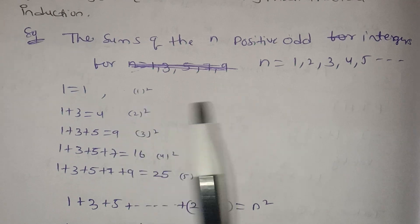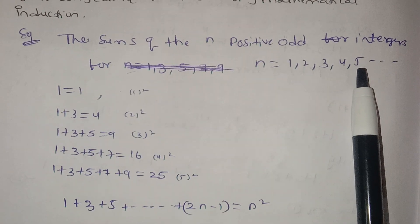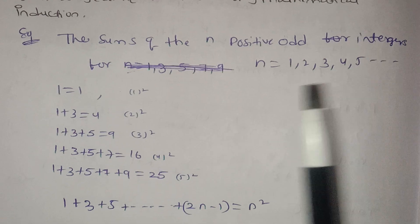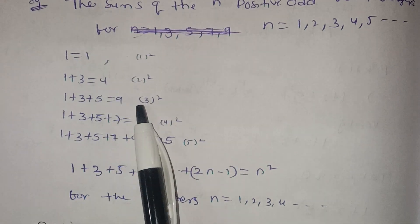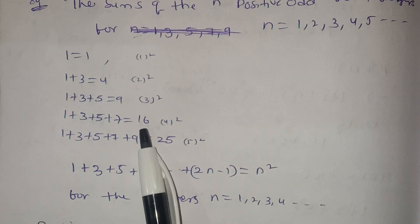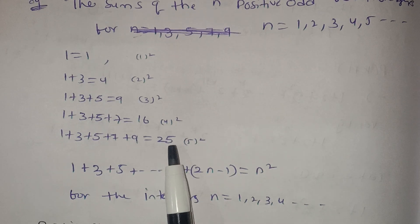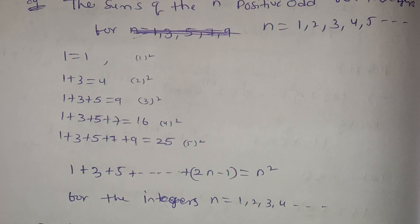Next, 1 plus 3 equals 4. Then 1 plus 3 plus 5 equals 9. Then 1 plus 3 plus 5 plus 7 equals 16. And 1 plus 3 plus 5 plus 7 plus 9 equals 25. Notice: 1²=1, 2²=4, 3²=9, 4²=16, 5²=25.